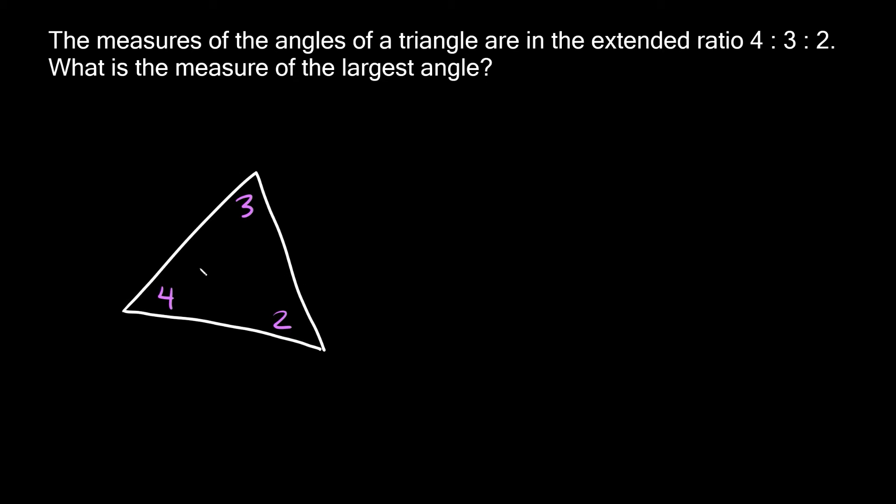And again, we have to add our x's because we don't know what they actually are. So we're gonna say 4x, 3x, and 2x. So we want to solve for x. And the way that we're going to do that is, first of all, we need to know the fact that whenever you add up all the angles inside of any triangle, they should add up to 180 degrees. So if we add all these three up, they should add up to 180.